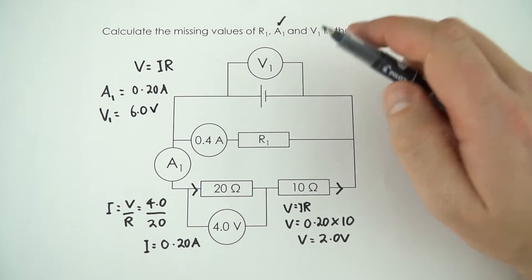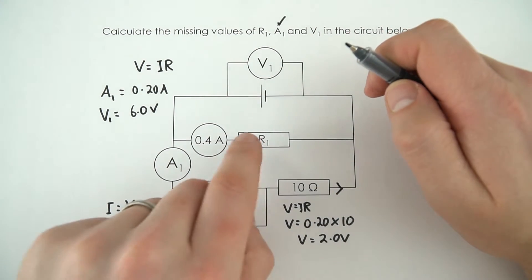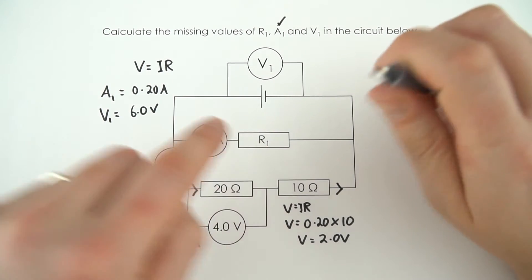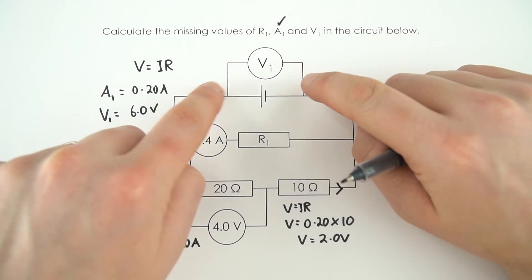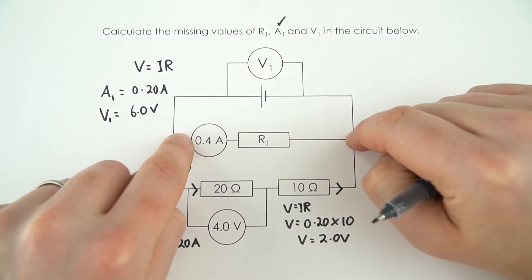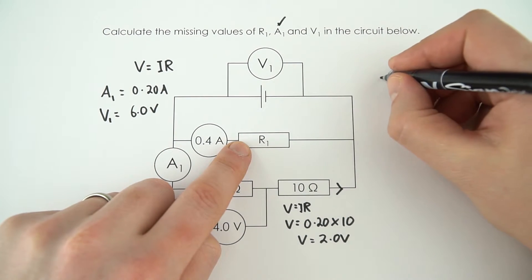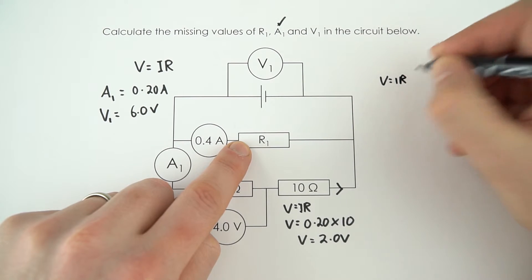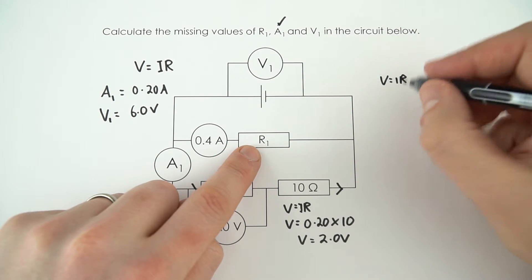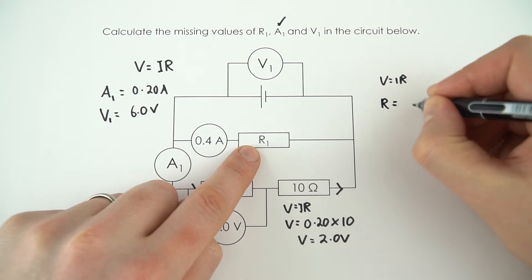And now the final thing we need to work out is the value of this resistance. So because we know that that's 6 volts, this must also be 6 volts across this resistor. And again, I might kind of sound like I'm saying the same thing, but V equals I times R. Now, across this resistor, we don't know the resistance. So R is equal to V divided by I.